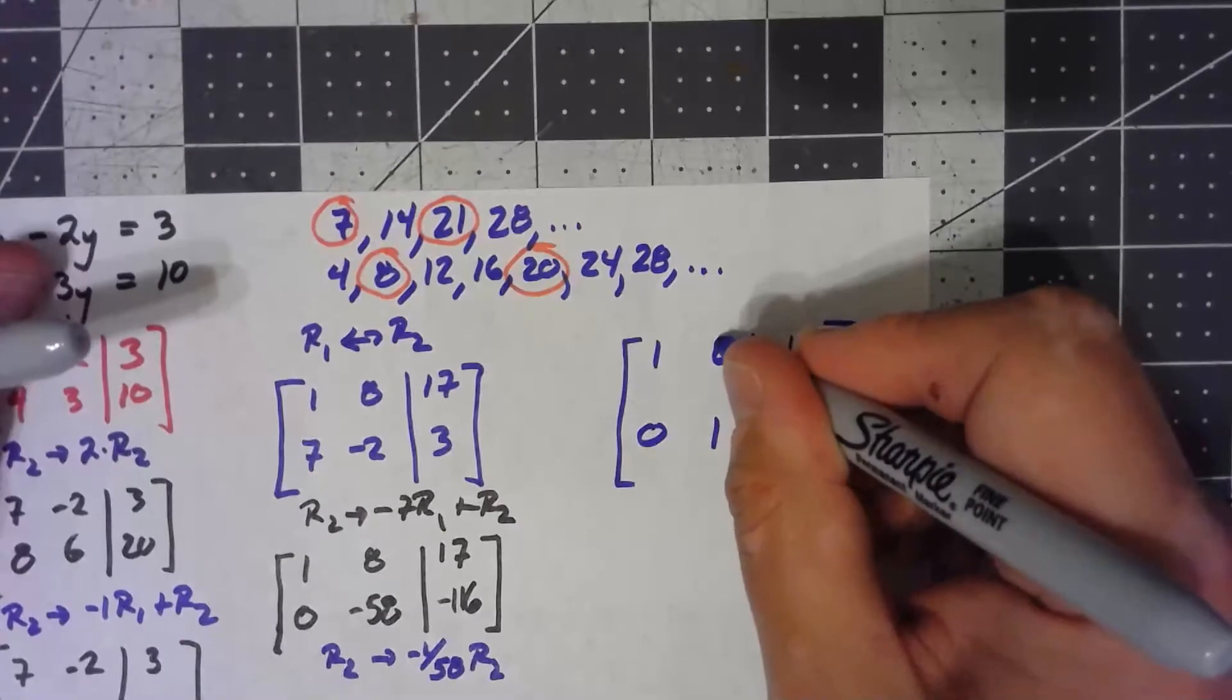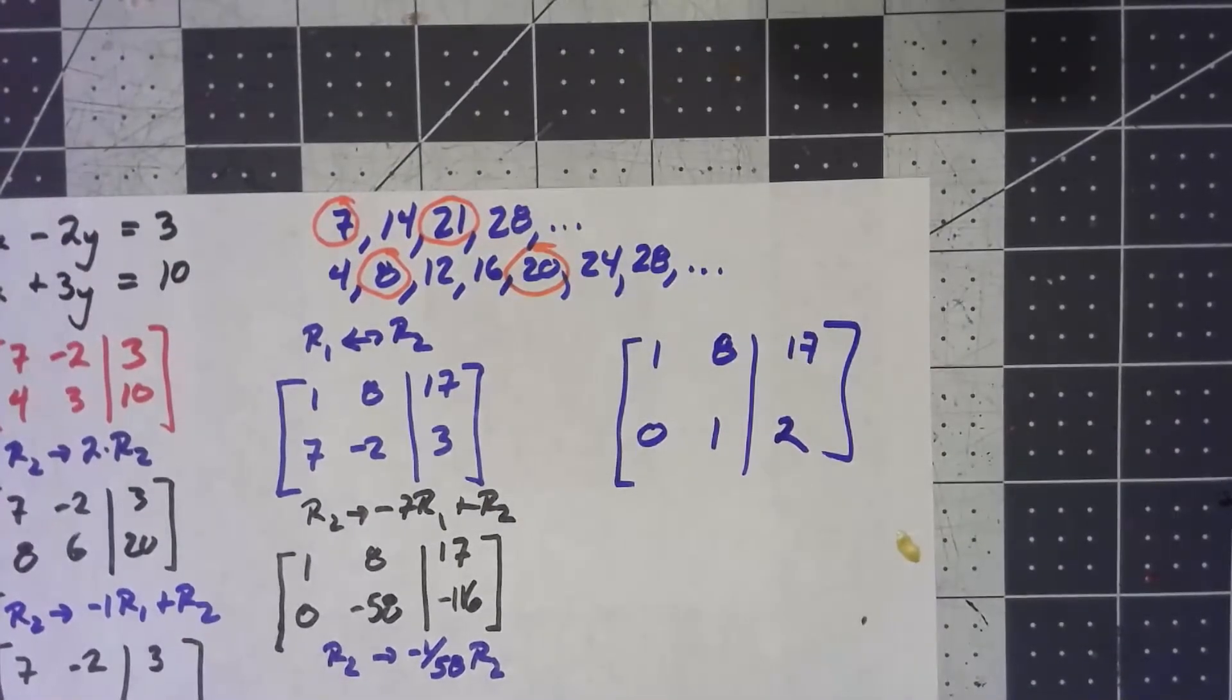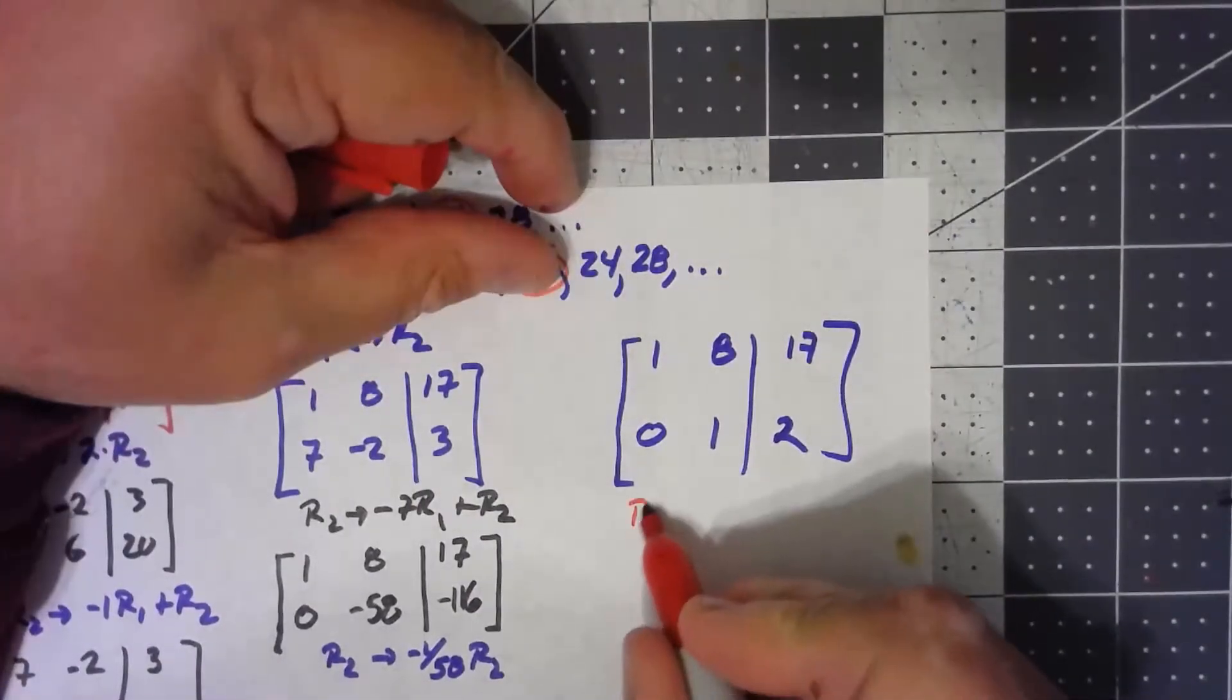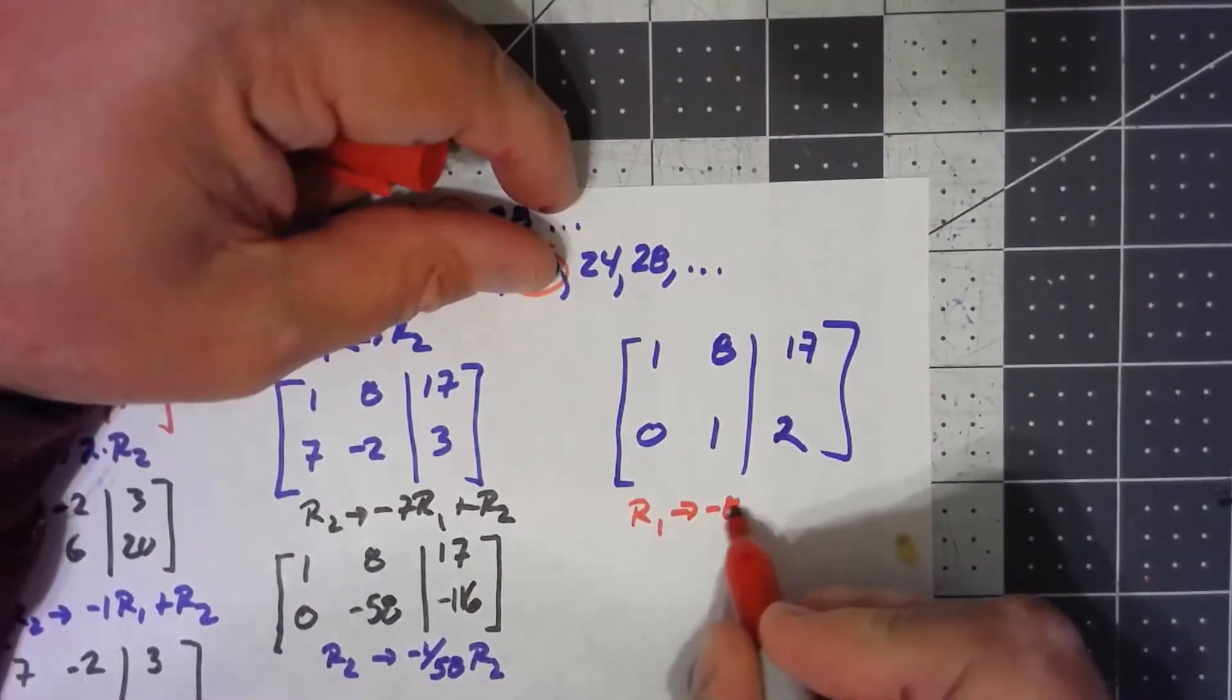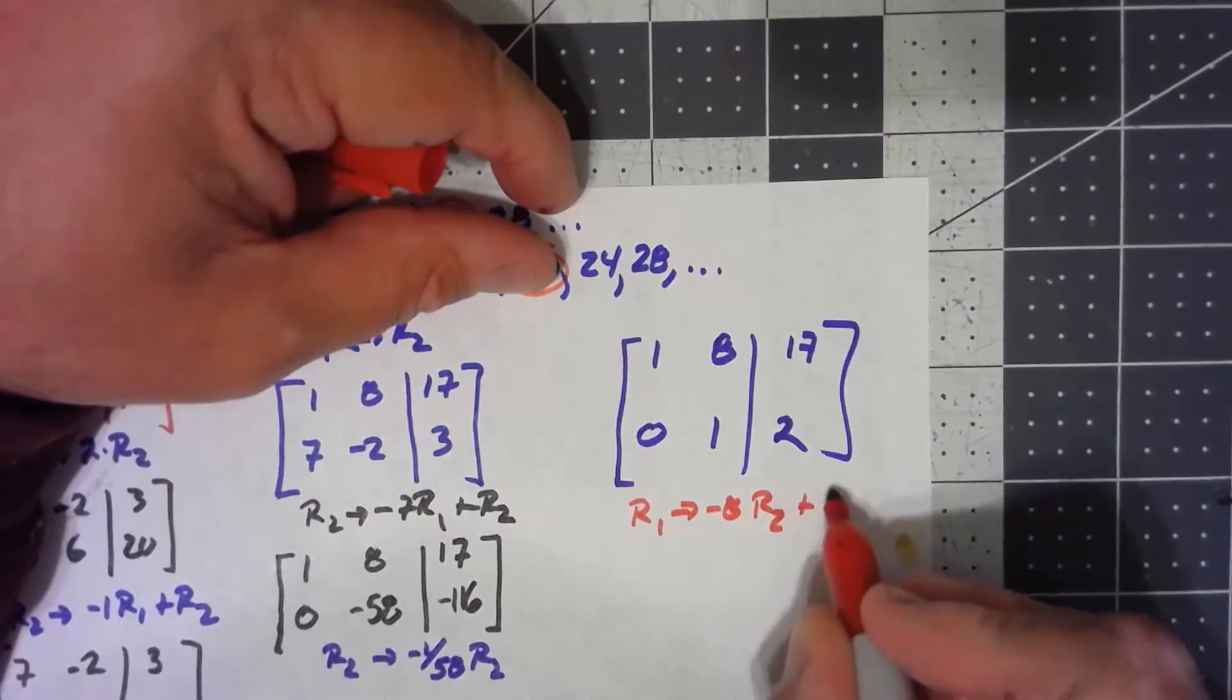Last thing is to turn this 8 up here into a 0. So the opposite sign of an 8 is a negative 8. So row 1 becomes negative 8, row 2 added to row 1.